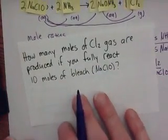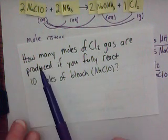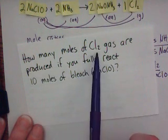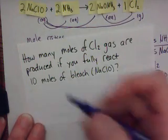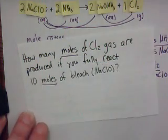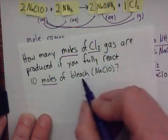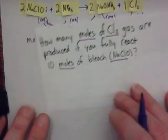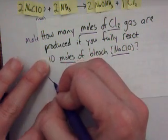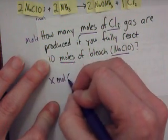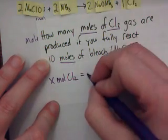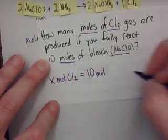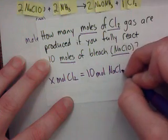Here's a problem. This is a stoichiometry problem because it asks how many moles of chlorine gas are produced if you fully react ten moles of bleach. I'm going from moles to moles, but switching chemicals in the process. The setup is: x moles of chlorine gas if I have ten moles of sodium hypochlorite.